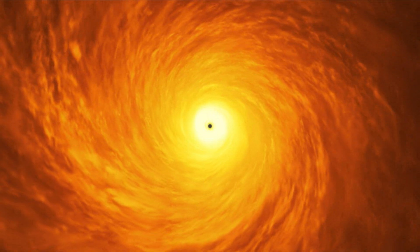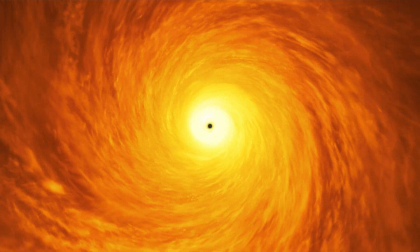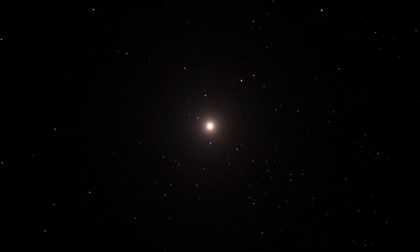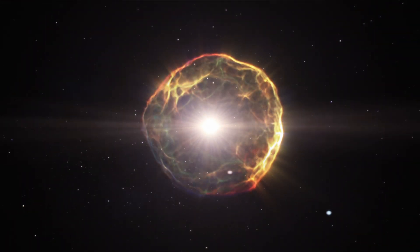If the imploding star is between about 8 and 20 times the mass of the sun, however, it won't form a black hole. Instead, the collapsing material will rebound off its core, causing it to erupt as a supernova.